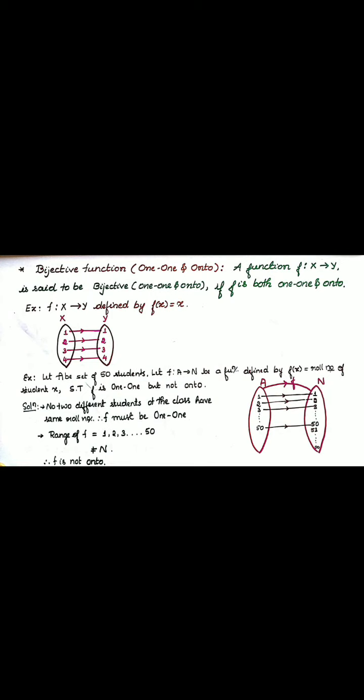This one-one and onto function both are true here. That is what we call bijective function. Let us discuss an example here.